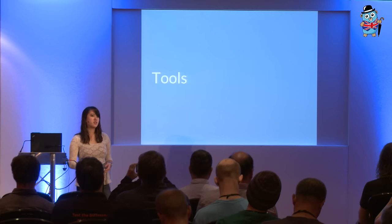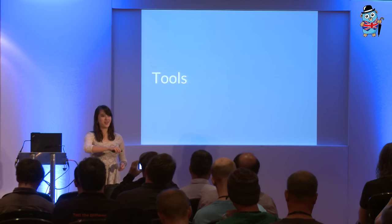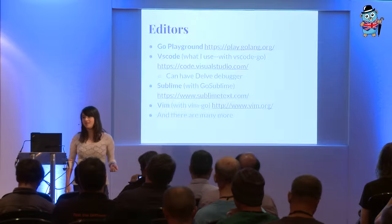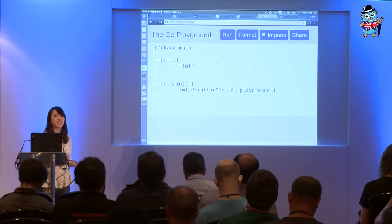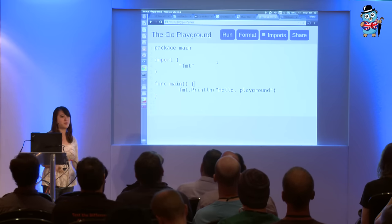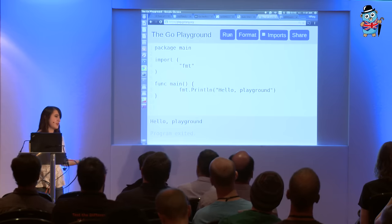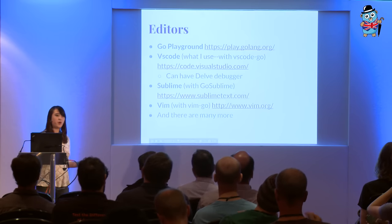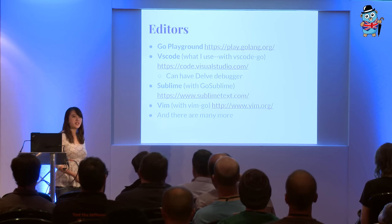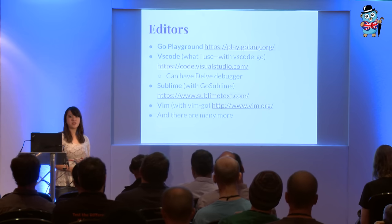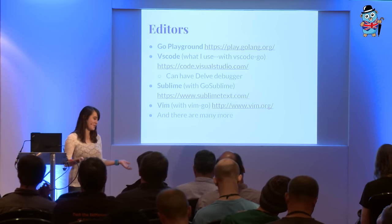So now you have some resources and a general idea of how to use Go, but you need somewhere to code. The first tool is the Go Playground. It's great if you have a single file and want to test one thing out without opening up an editor. You can throw whatever code you want in and just hit run. That's great for one file, but if you're trying to do an entire package with a bunch of different files, you can't really do it there. So what I use is VS Code with the VS Code Go plugin, and you can also have the Delve Debugger. Previously I used Sublime with Go Sublime, and lots of people still love Vim, so there's Vim Go.